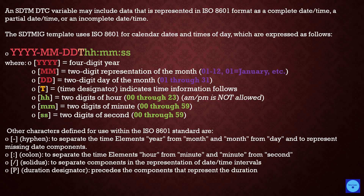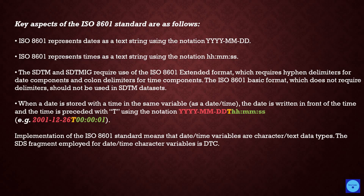The slash (solidus) is used to separate components in the representation of date and time intervals. P is the duration designator — it precedes the components that represent duration. Spaces are not allowed in any ISO 8601 representation. Regarding key aspects of the ISO 8601 standard: ISO 8601 represents dates using the notation YYYY-MM-DD and time values are represented as HH:MM:SS separated by colons. The SDTM Implementation Guide requires use of the ISO 8601 extended format, which requires hyphen delimiters for date components and colon delimiters for time components. The ISO 8601 basic format, which does not require delimiters, should not be used in SDTM datasets.